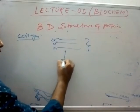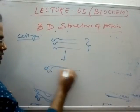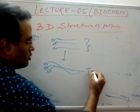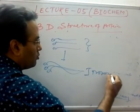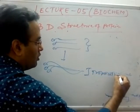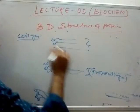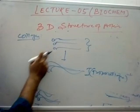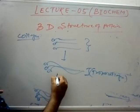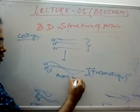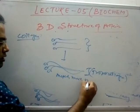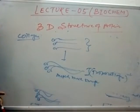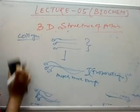The second example, collagen, is basically three structures that super-twist upon each other, which is called procollagen. Collagen involves the super-twisting of three individual structures, and that is why it provides much more strength compared to keratin.